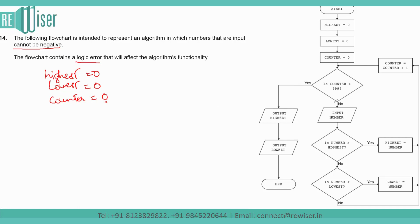But if counter is not greater than 999, then you are inputting a number and checking if the number is greater than highest. If the number is greater than highest, then whatever you input will become the highest. And if not, then you are checking if the number is less than lowest, making the value of lowest that number, and going back to increment counter and again checking if counter is greater than 999.